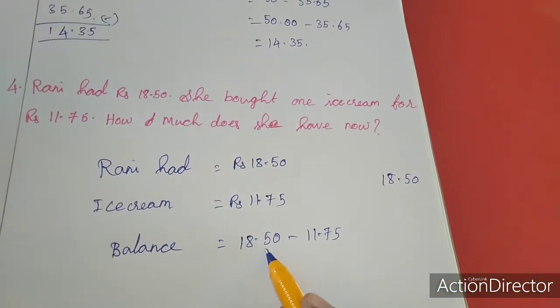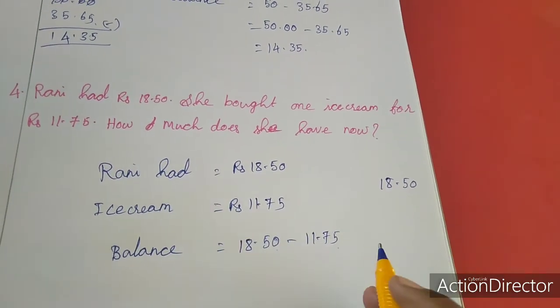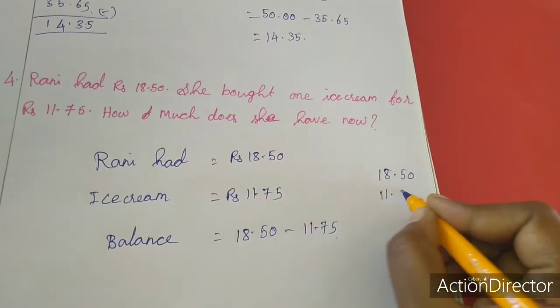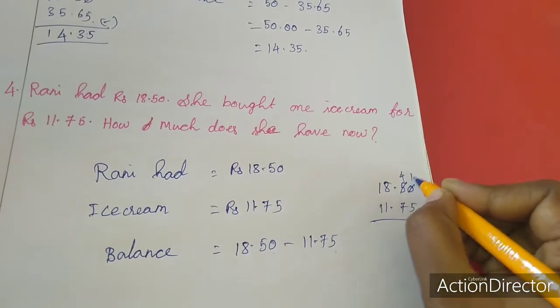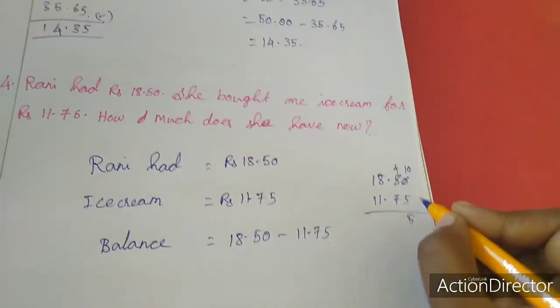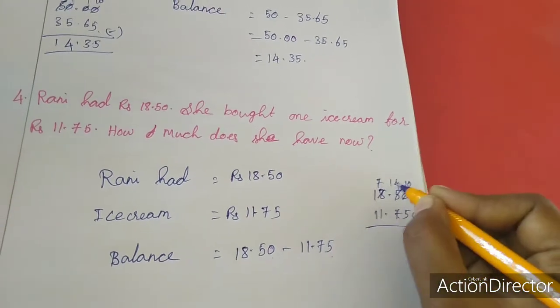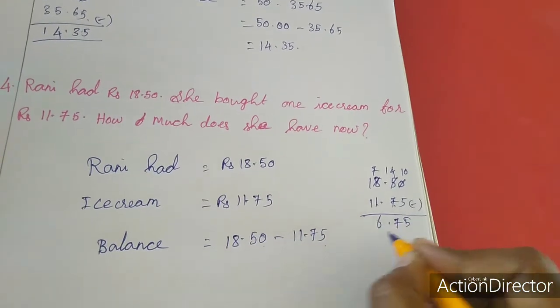Directly I am doing the subtraction because here also dot after two digits, here also dot after two digits only. So this is like fraction, like decimal. So that is why I am going to do the subtraction directly. Here borrow 4, here will contain, 10 minus 5 is 5. 4 minus 7 will not be possible, 14 minus 7 is 7, 7 minus 1 is 6.